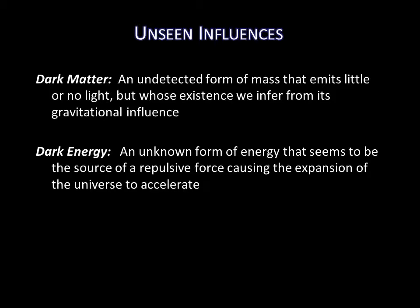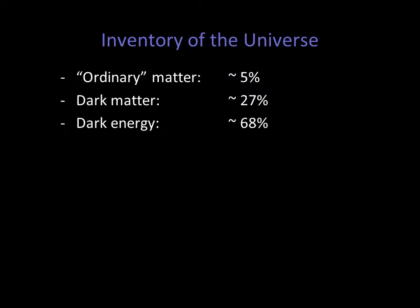It's a little crazy to think about, but the matter we're used to — the stuff all around us — makes up about 5% of all the matter in the universe. About 27% of the universe is in the form of dark matter, and about 68% is in the form of dark energy.